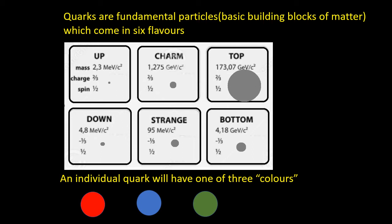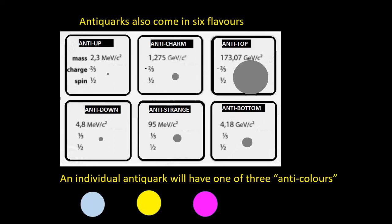All quarks have a colour charge, which must be red, blue or green. There's also six flavours of anti-quark, anti-up, anti-down, anti-charm, anti-strange, anti-top and anti-bottom. Each anti-quark will have a colour charge, which is anti-red, anti-blue or anti-green, or cyan, yellow, magenta, as are often shown.